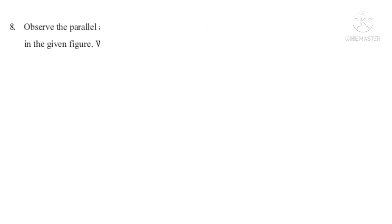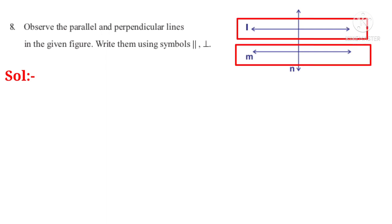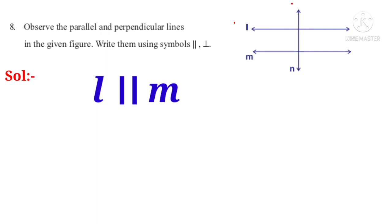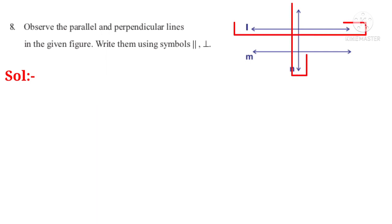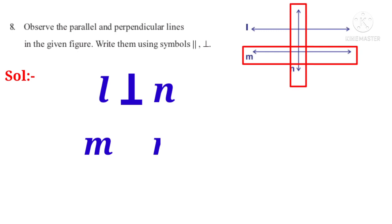Now let us do the eighth problem. Observe the parallel and perpendicular lines in the given figure and write them using symbols. Observe that lines L and M are at equal distance, so L is parallel to M. Observe lines L and N — both are at a 90 degree angle, so they are perpendicular: L is perpendicular to N. Lines M and N are also at an angle of 90 degrees, so M is perpendicular to N.